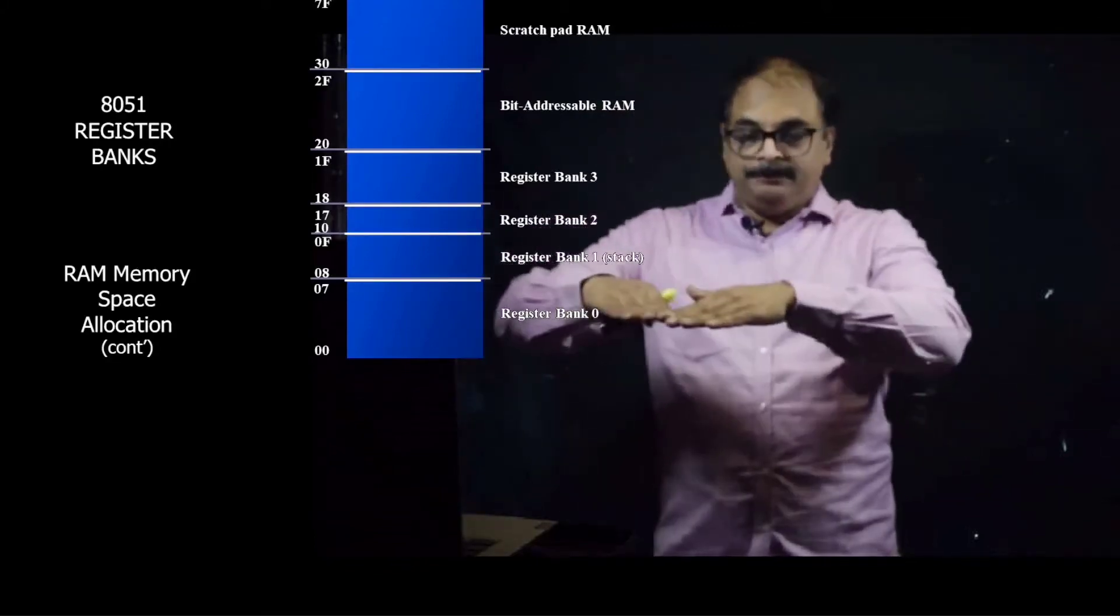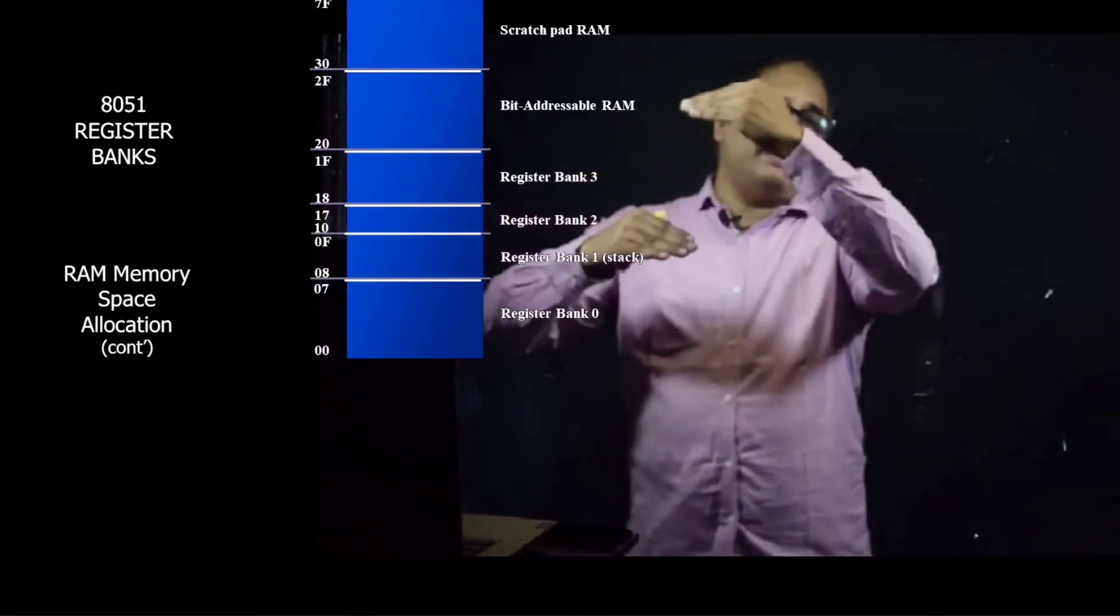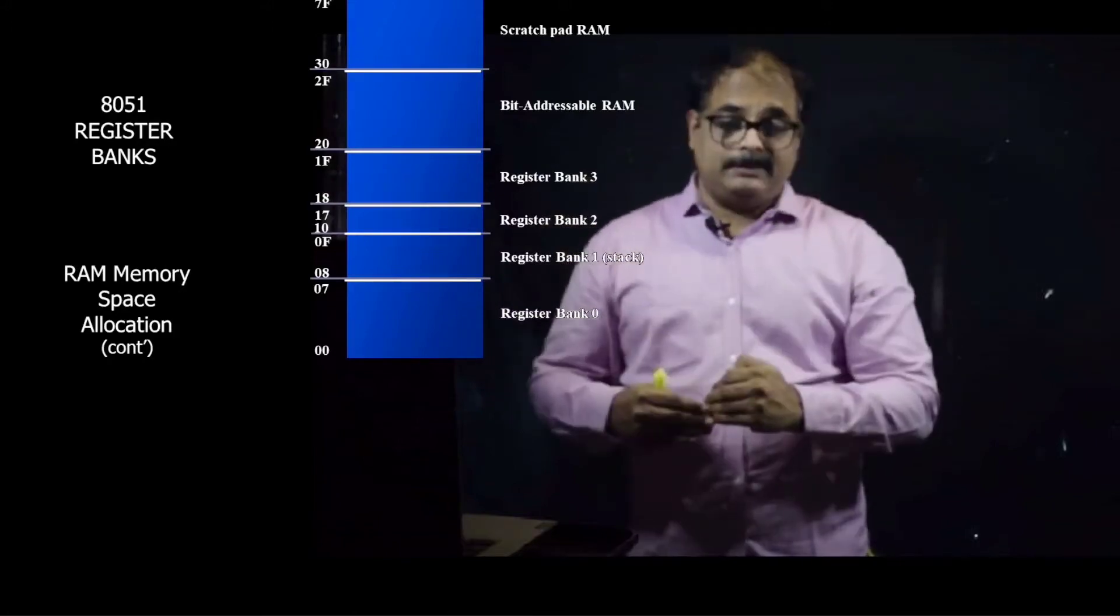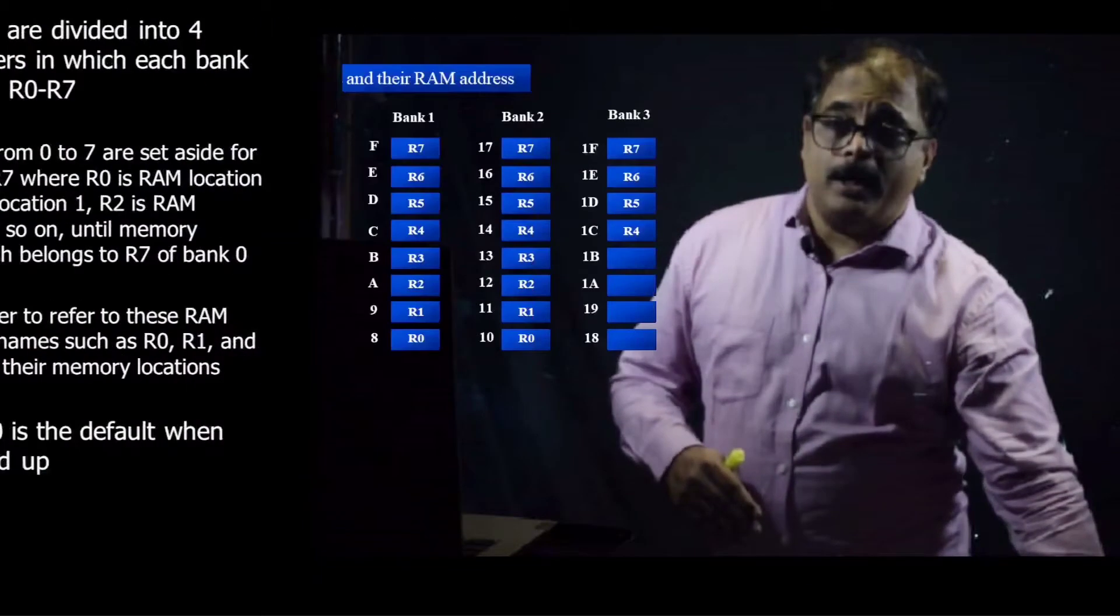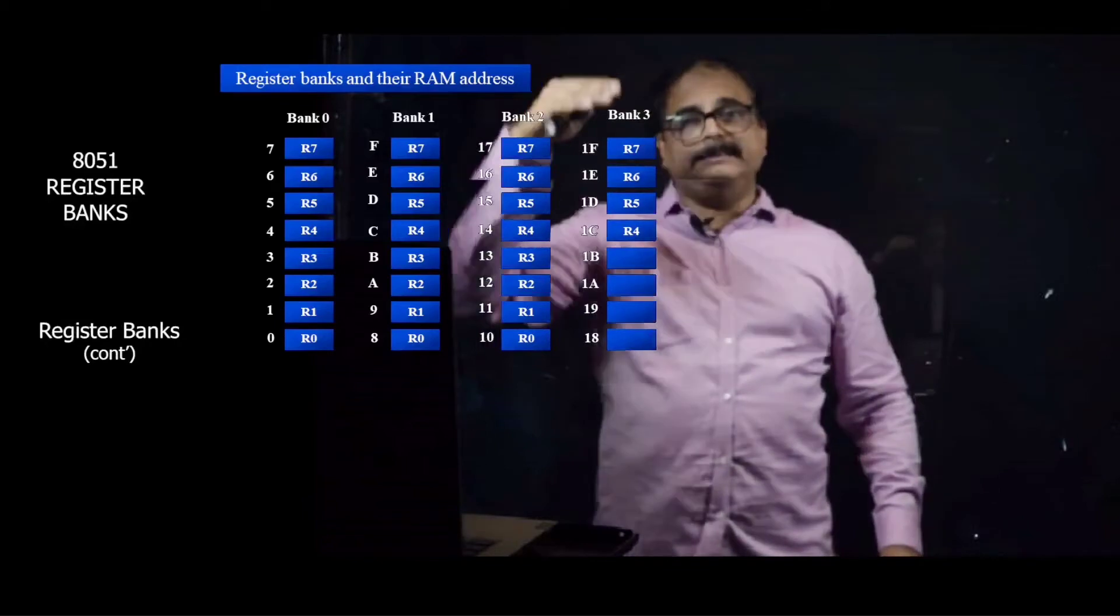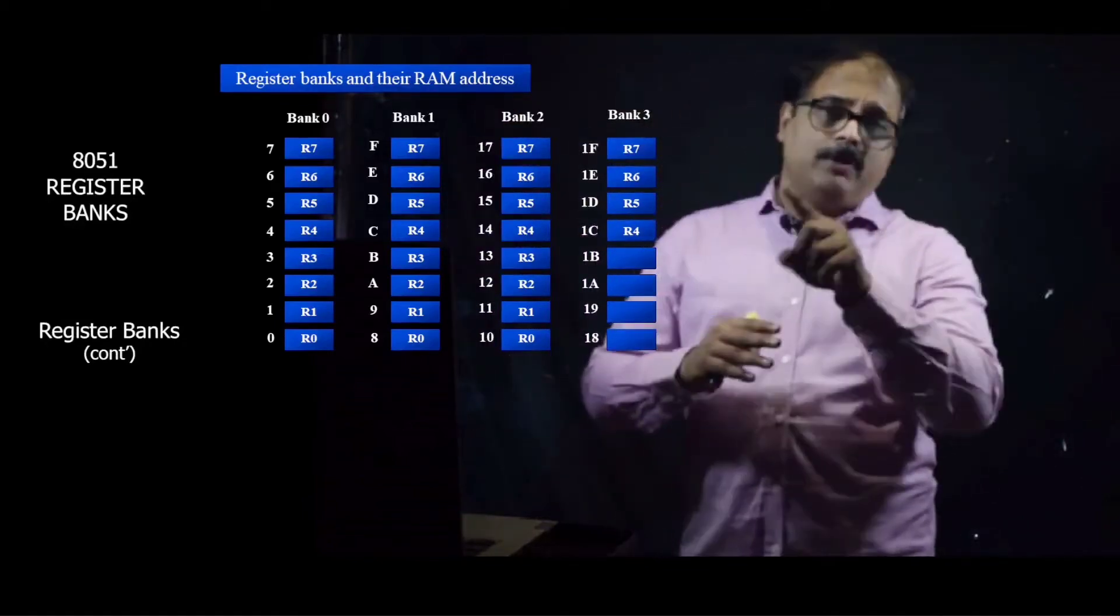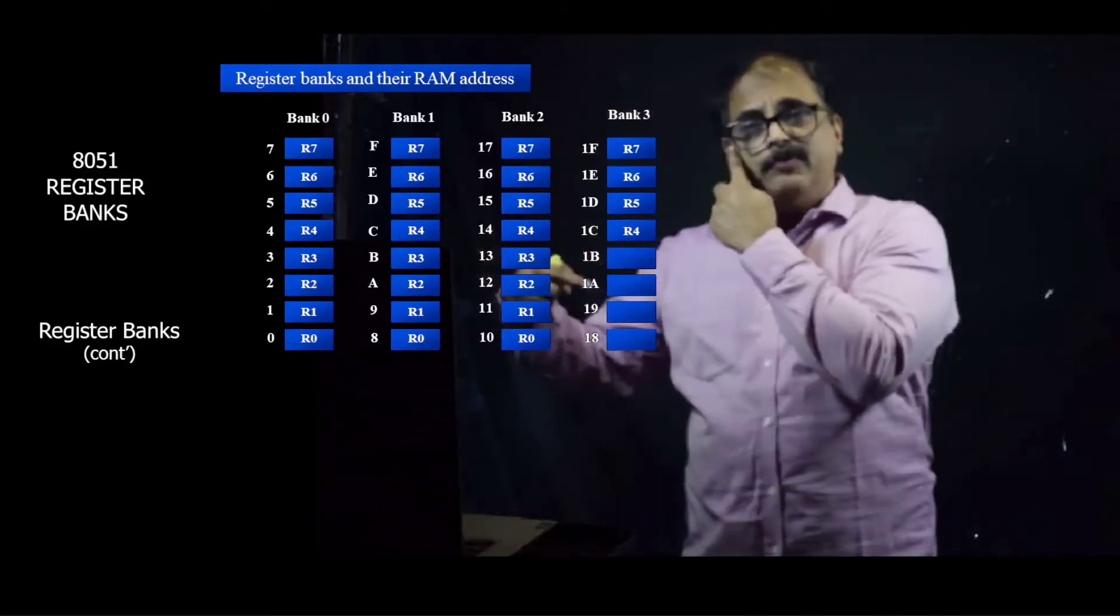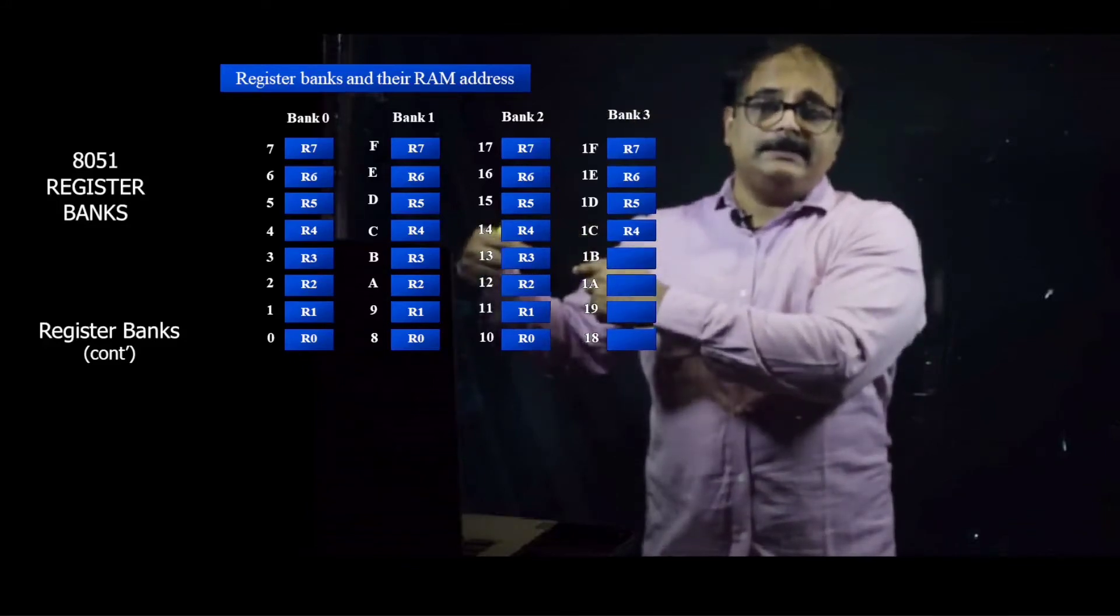There are four banks: register bank 0, which is at the bottom, register bank 1, register bank 2, and register bank 3. Each bank has got registers ranging from R0, R1, R2, R3, R4, and so on till R7. As you can see on the slide, there are four banks, each bank has got registers ranging from R0 to R7 and there are addresses given.